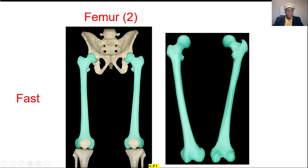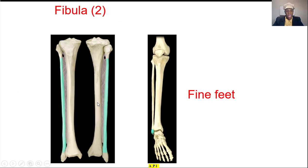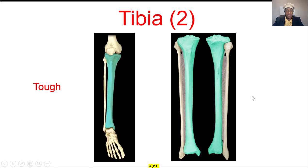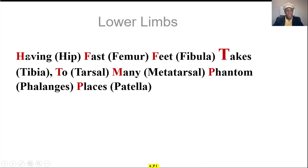This is the femur — fast. The fibula — fine, the smaller one. The tibia — tough, the heavy one. So: having fast feet takes too many phantom places.